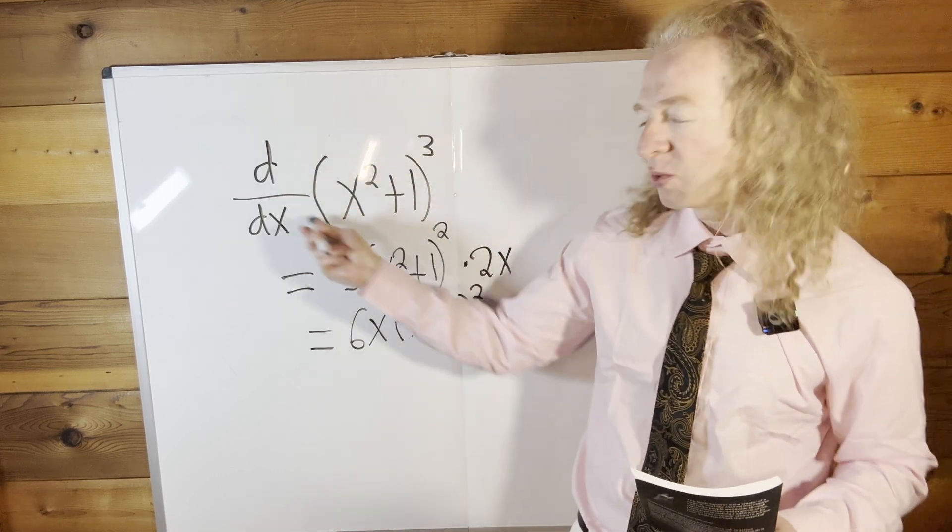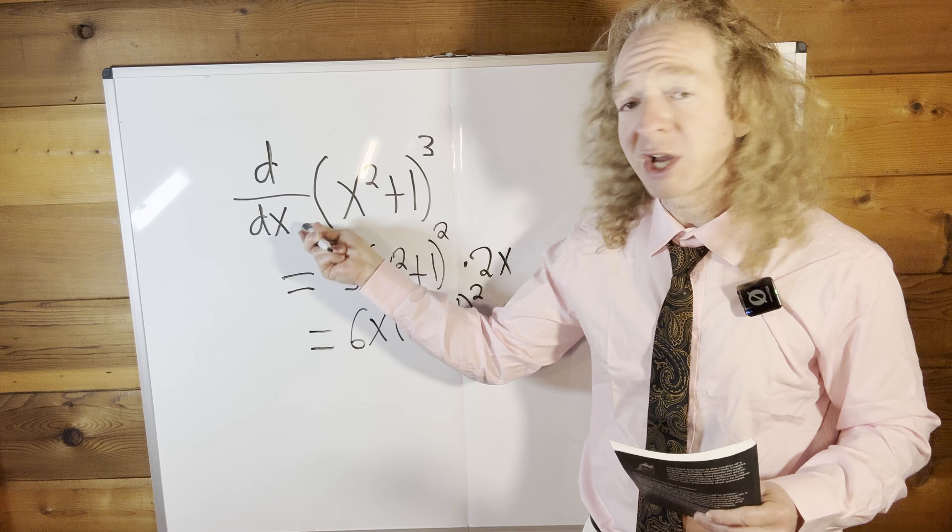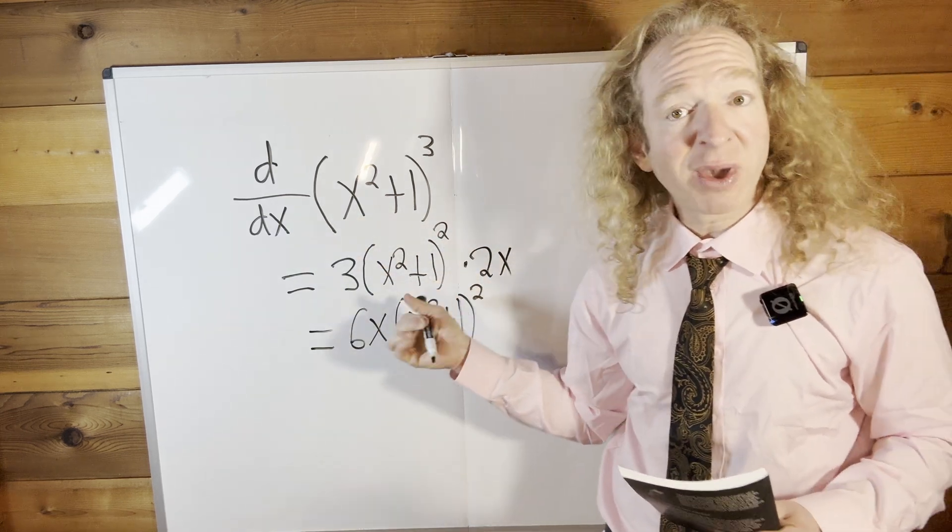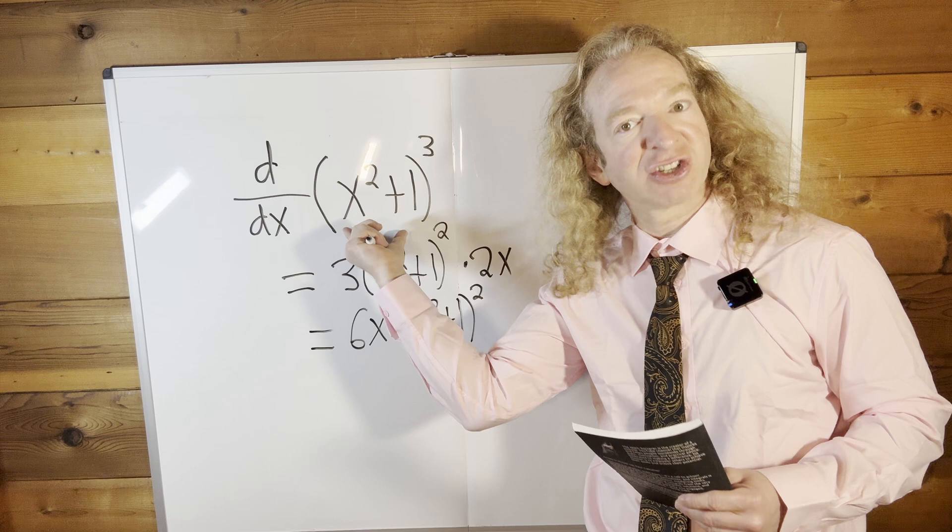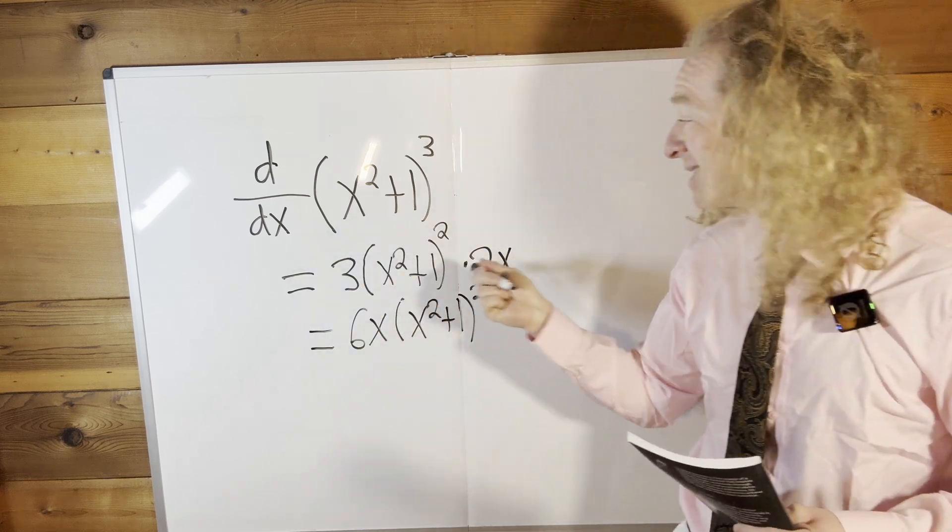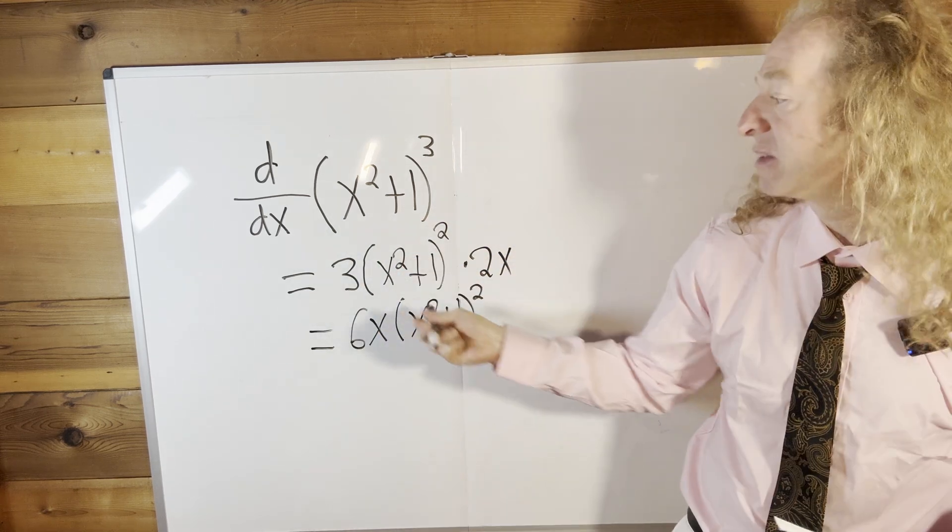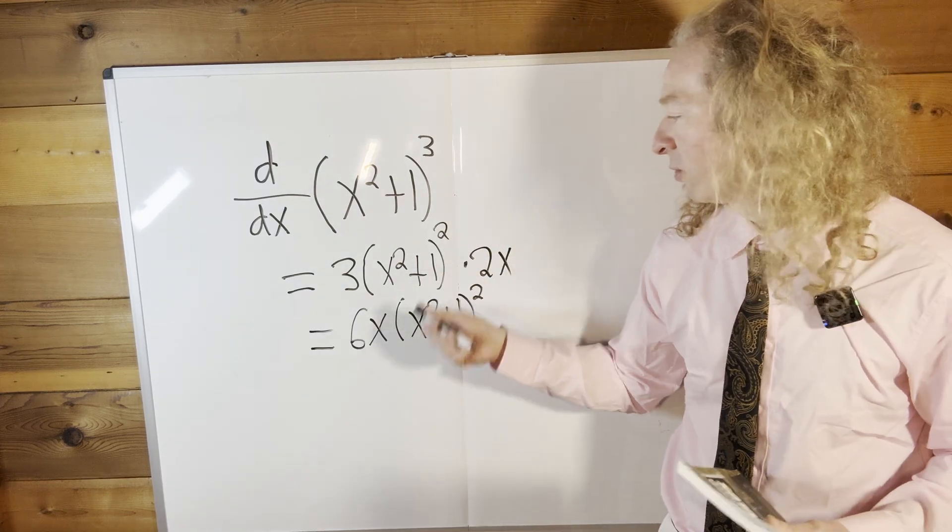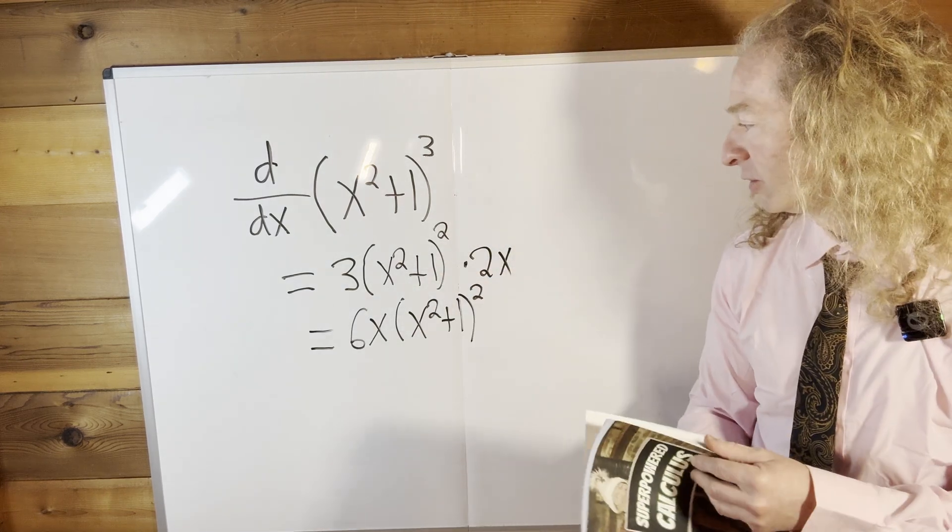Let's just check that. So this was the original question. We brought down the 3, subtracted 1 from the exponent, leave it evaluated at the inside. This is your inside function, x squared plus 1 cubed, times the derivative of the inside. Well, the derivative of x squared is 2x, and then the derivative of 1 is 0. And so we're good to go.